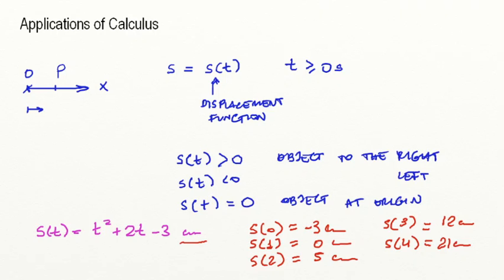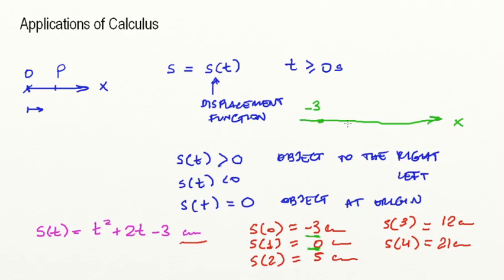Also, if we take a look at each of those, we could say if they are to the right or to the left of my origin point. For example, I begin my motion to the left of the origin because this number is negative. Then I go through the origin when time is equal to 1, my displacement is 0. And then it only goes positive from that. So at time equals 0, my object would be at negative 3 centimeters, then at time equals 1 it would be at 0, and then it's moving to the right — then 5, 12, and 21. Obviously not to scale, but that's what's happening.